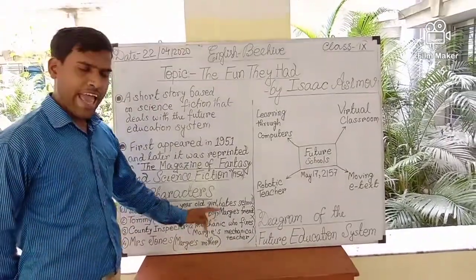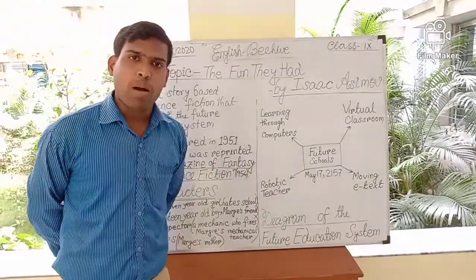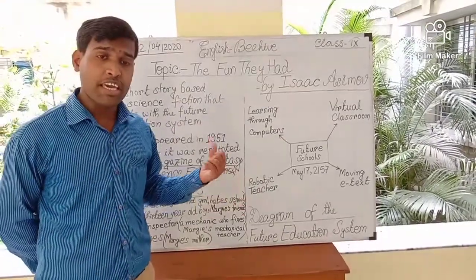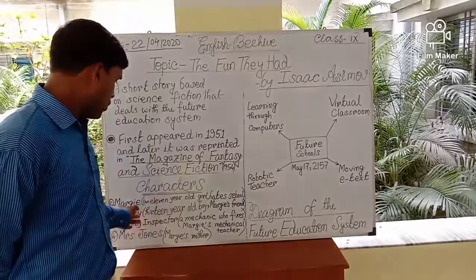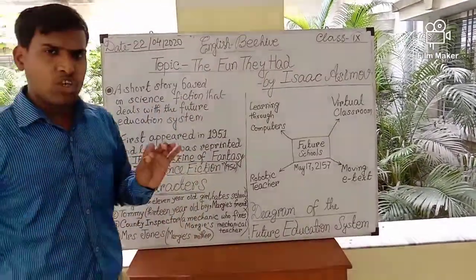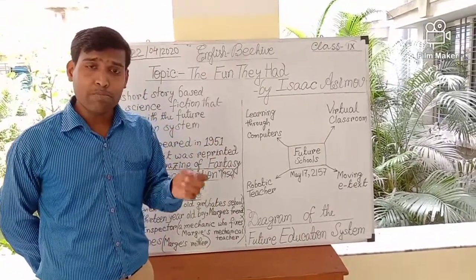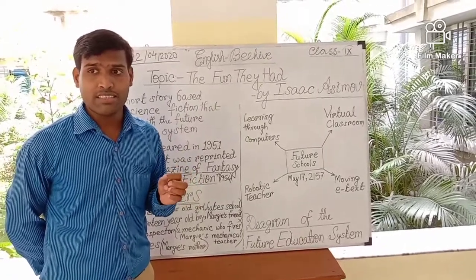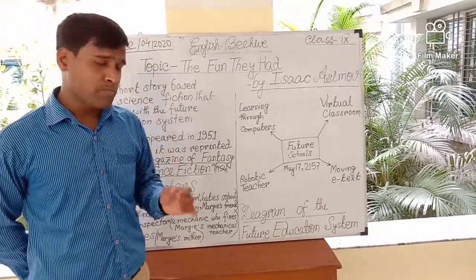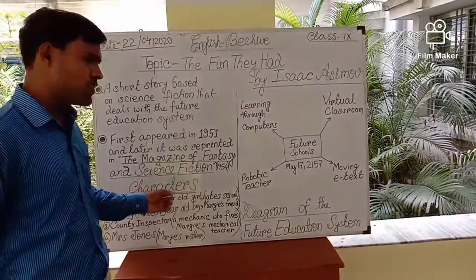The other character is Tommy, who is 13 years old and Margie's friend. Tommy found a book in his attic and informed Margie about it. Margie is 11 years old and has no interest in school. When she sees the book — which is yellowish in color because it is very old — she dislikes it because of her hatred for school.